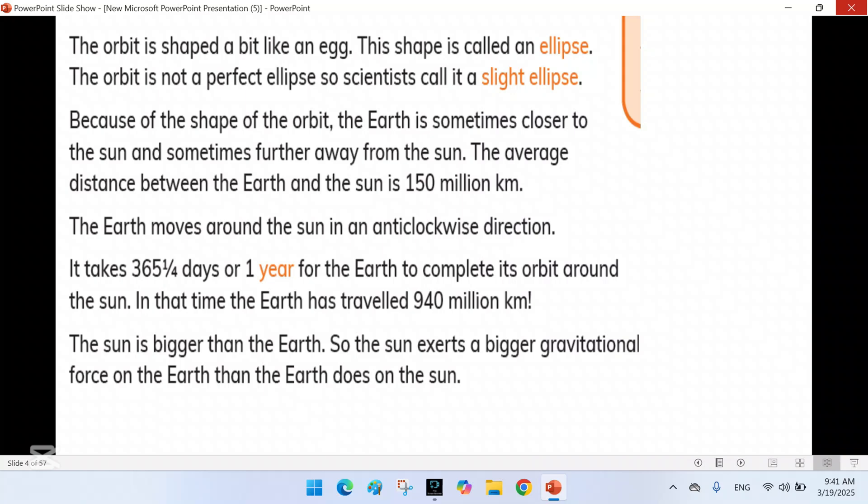The sun, being much larger than Earth, exerts a stronger gravitational pull on Earth, keeping it in its orbit. The Earth moves around the sun in an anti-clockwise direction.